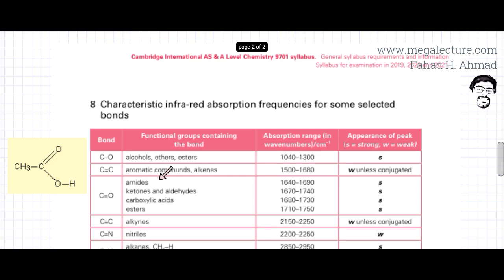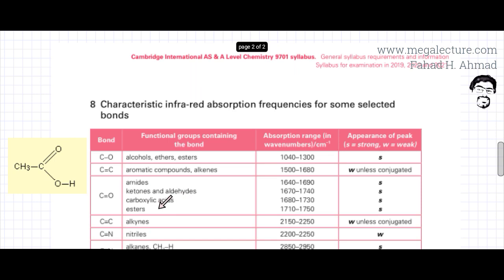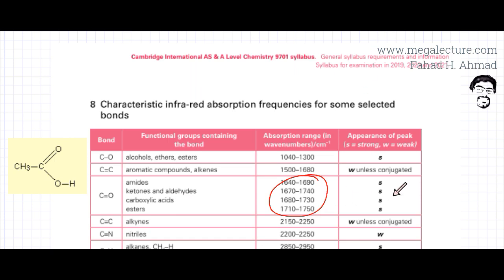The C=O could be present in amides, ketones, aldehydes, carboxylic acids — which is our case with ethanoic acid — or esters. The frequency at which this bond is going to vibrate is going to be around 1,700 to 1,750 wave numbers, and it's going to be a very strong absorption.